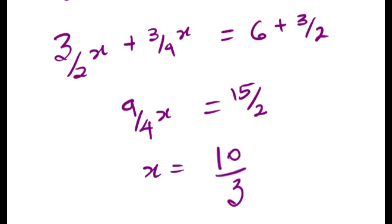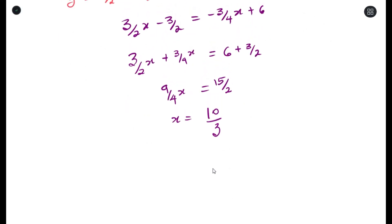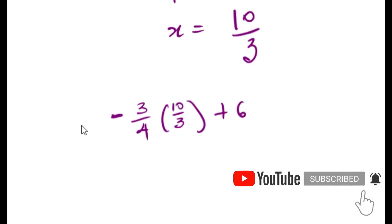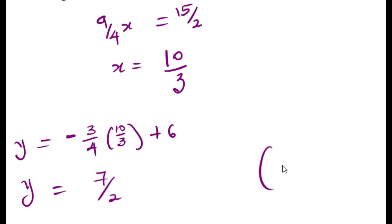To get the Y coordinate, we substitute the X value into either of the two equations. The coordinate of the point of intersection E is (10/3, 7/2).